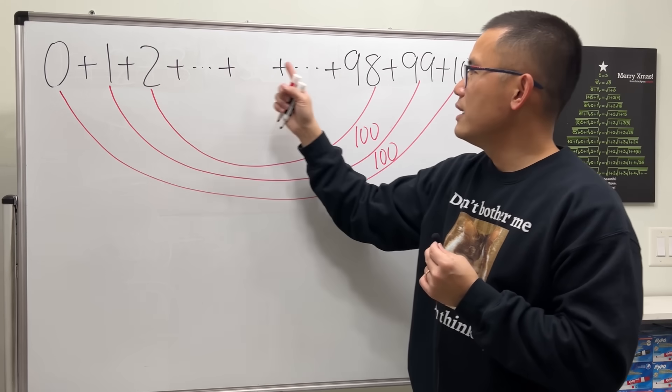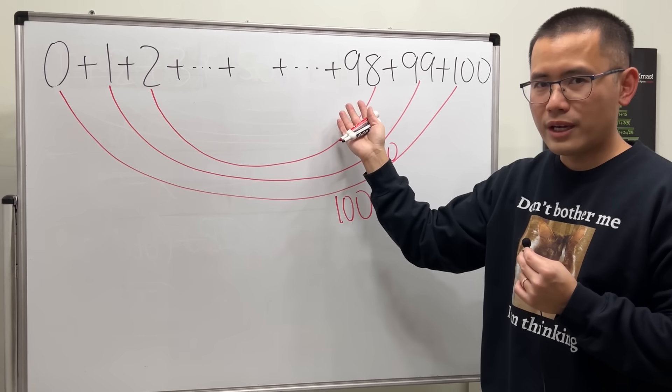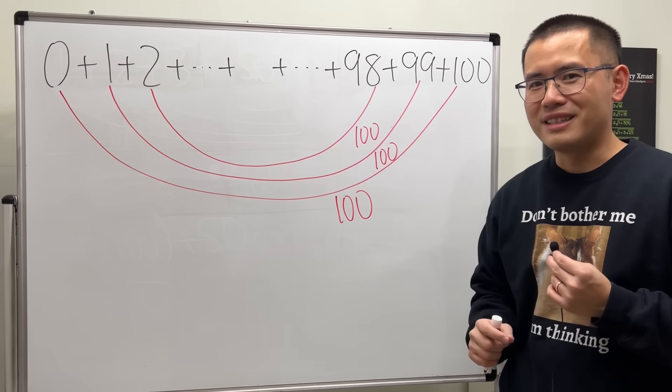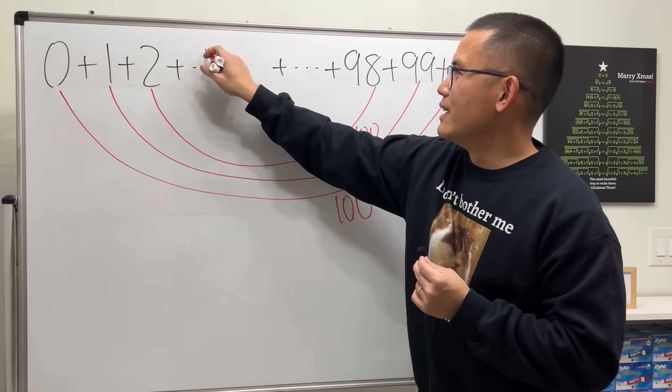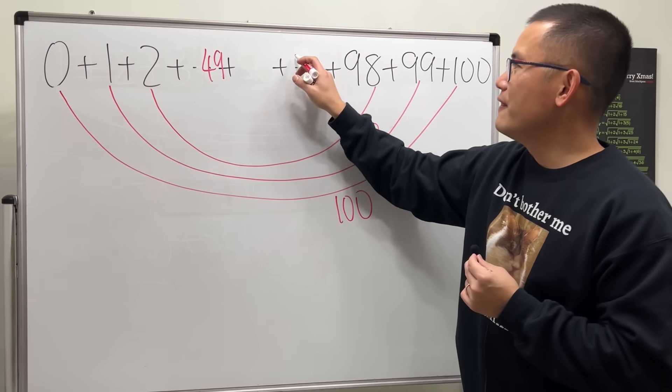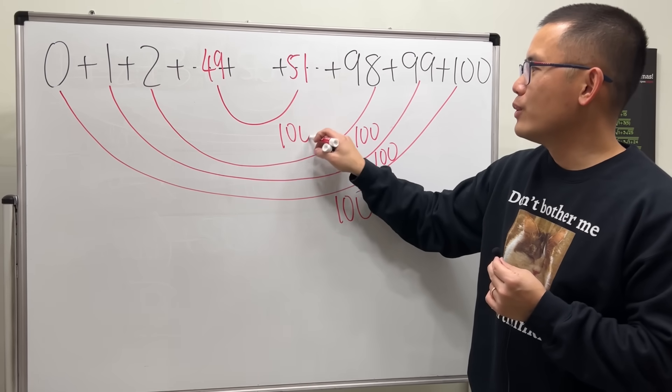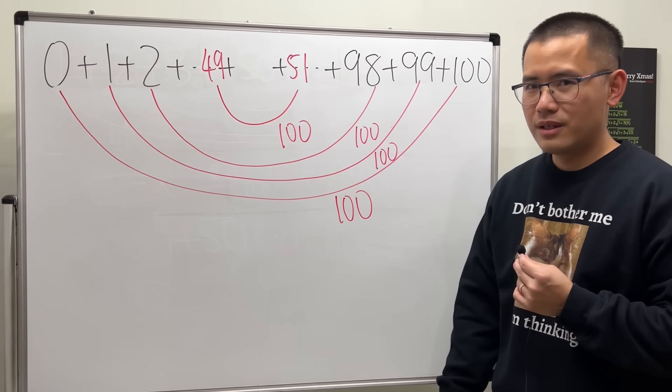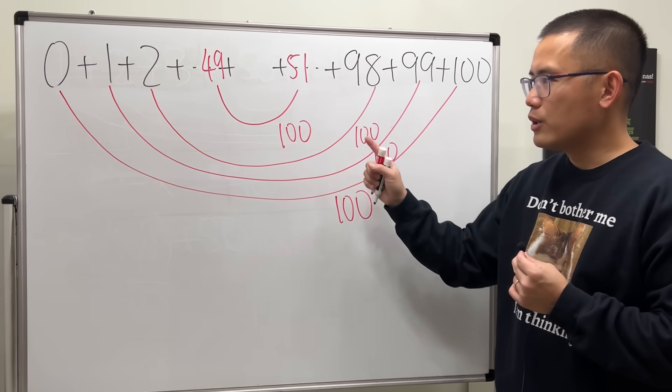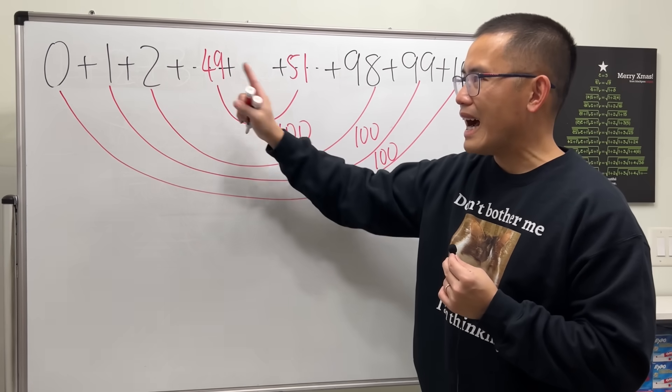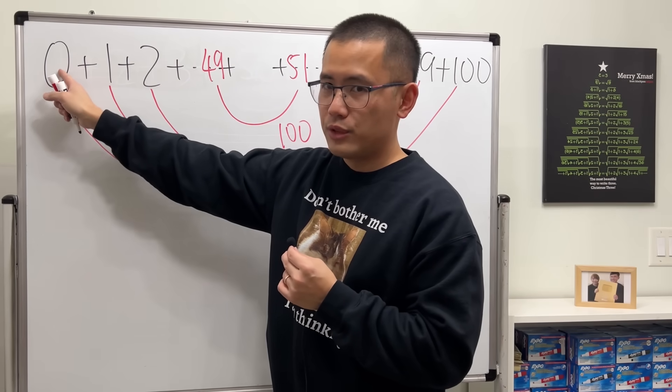Well, the next one will be 3 and 97, and so on. What's the last one? It's not 50 because 50 is by itself, so it's 49 and 51. This plus that also gives us 100.